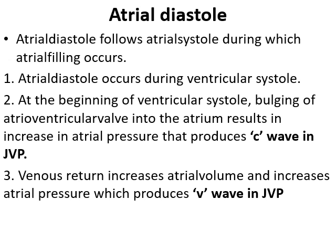This causes the closure of AV valves. Atrial diastole follows atrial systole, during which atrial filling occurs. Atrial diastole occurs during ventricular diastole and lasts about 0.7 seconds. At the beginning of ventricular systole, bulging of AV valves into the atrium results in production of the C wave in the jugular venous pulse. During diastole, venous return rushes into the ventricles, generating a rise in atrial pressure and producing the V wave in the jugular venous pulse.